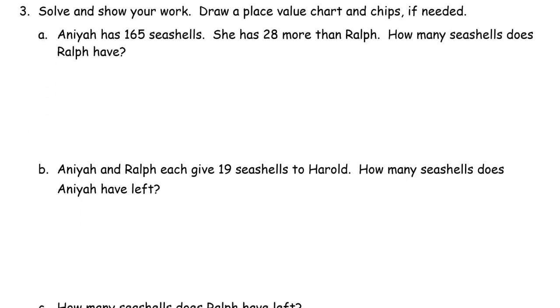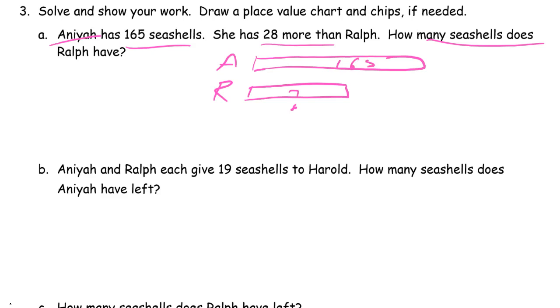Finally, solve and show your work. Draw a place value chart and chips if needed. Anea has 165 seashells. She has 28 more than Ralph. How many seashells does Ralph have? So this is what she has. Anea. And Ralph. We don't know how many Ralph has. We know Anea has 165. And we know this is the more, which is 28. So we have to find out the difference between these two.